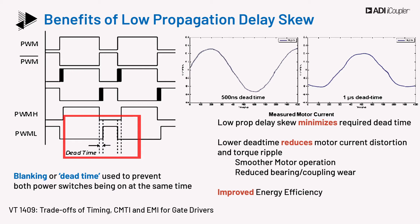A smaller skew allows a much tighter dead time to be set. Tighter dead time decreases motor current distortion and torque ripple, resulting in smoother motor operation and reduced bearing or coupling wear. Additionally, tighter dead time improves energy efficiency. Hence, for optimum efficiency, low skew is desirable.